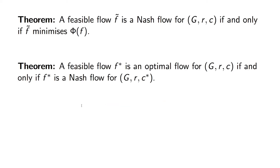This leads us to two results that are very powerful and basically show that a Nash flow is an optimal flow for another game, and an optimal flow is a Nash flow for another game. So it shows the equivalence between optimal behavior and Nash behavior.